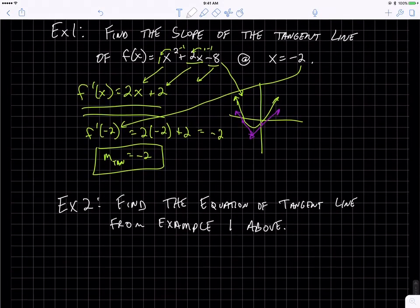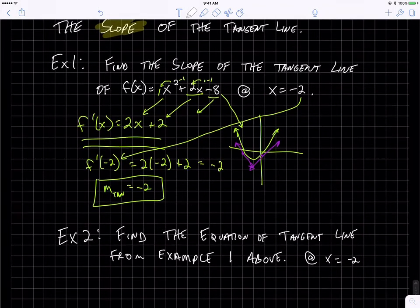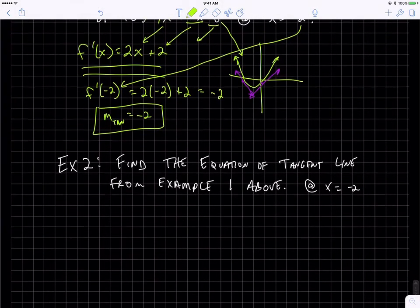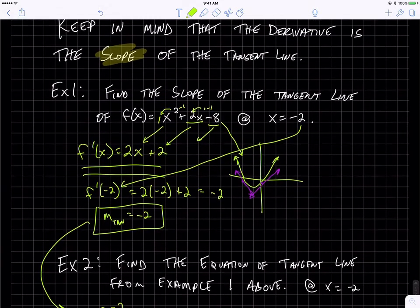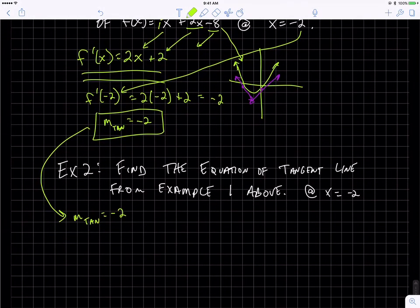You'll start off the same way. When I want the equation of the tangent line at x equals negative 2, you have to start off the same way. If you want the equation of the tangent line, you need to find the slope of the tangent line. So I'm going to use that answer from number 1. If this was just a problem right from the beginning, you'd have to start by doing all this to get the slope of the tangent line.